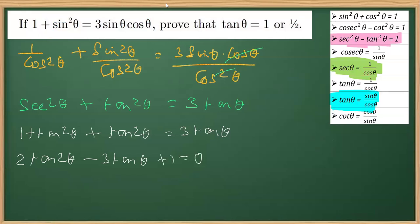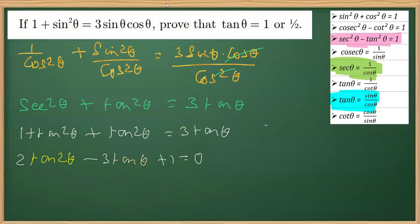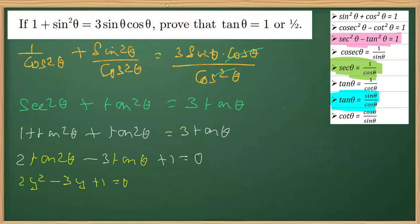We can find the solution of this quadratic equation. To make it easier, I'm going to replace tanθ with y. So the equation becomes 2y² minus 3y plus 1 equals 0.